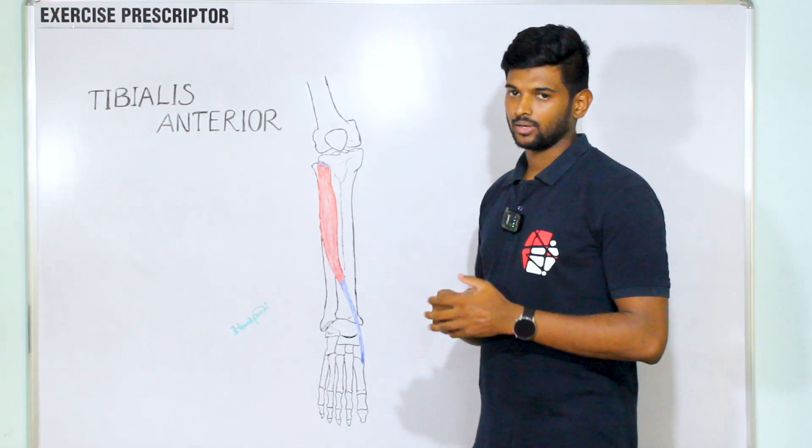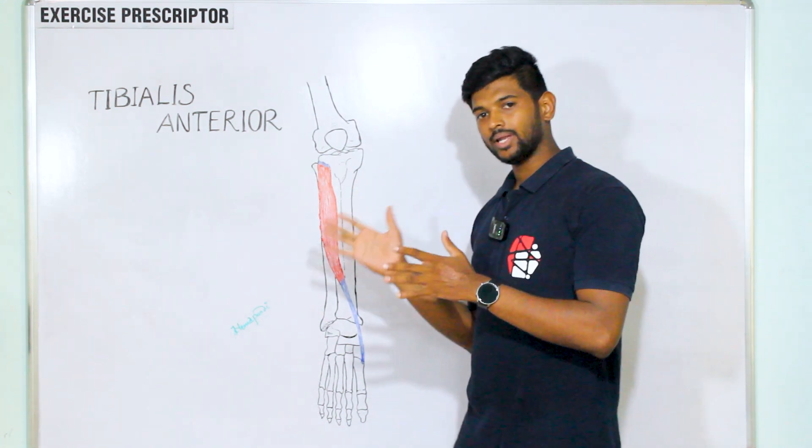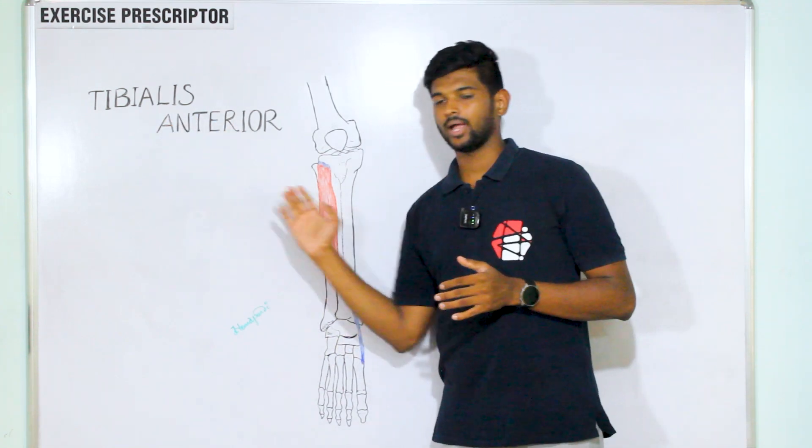Why is this muscle called tibialis anterior? Because this muscle attaches on the tibia and is situated anterior to the tibia. So this muscle is called tibialis anterior.